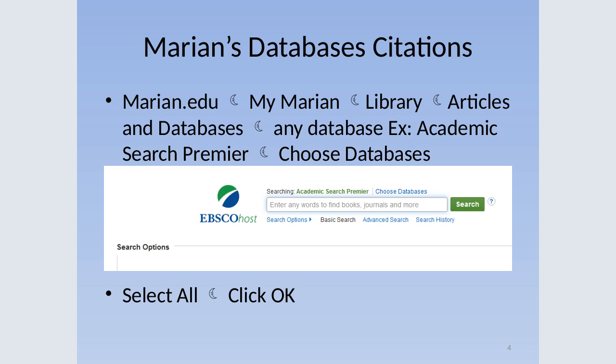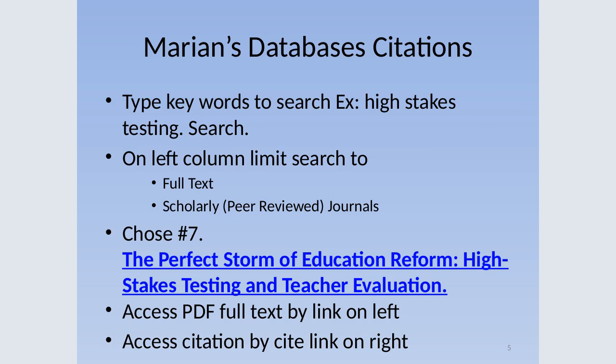We're going to talk a little bit about Marion's databases and how you can find articles that way. This is showing you how to get to the databases — those look like moons but they're supposed to be arrows. Some of you have already gone through the EndNote training, so you probably know how to get to the databases. When you get into the search, you would type in something specific to the type of research that you're doing. On the left-hand column, there's a way to limit your search.